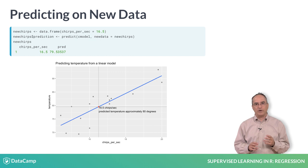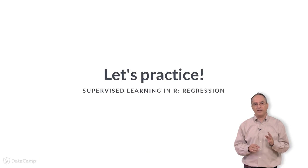The model predicts that a chirp rate of 16.5 chirps per second should correspond to a temperature of almost 80 degrees. Now let's practice fitting linear models and making predictions.